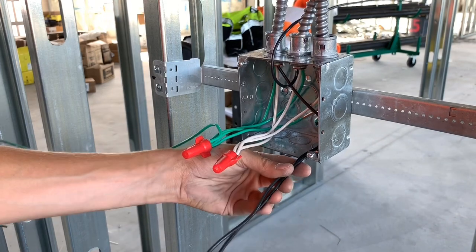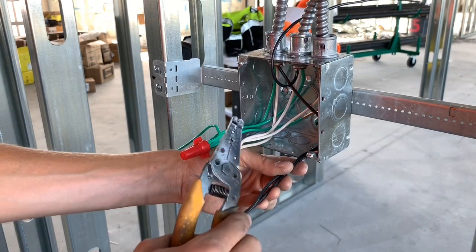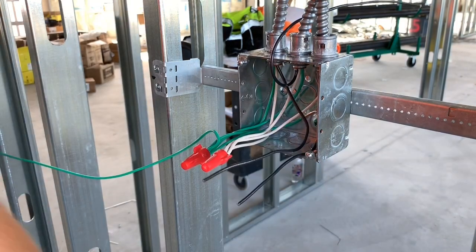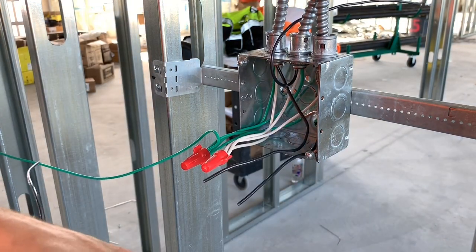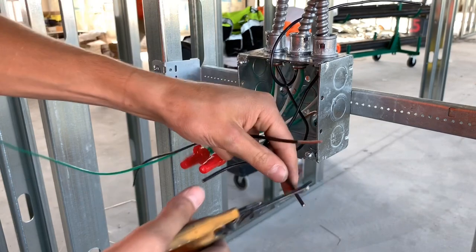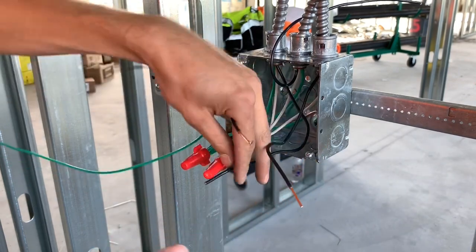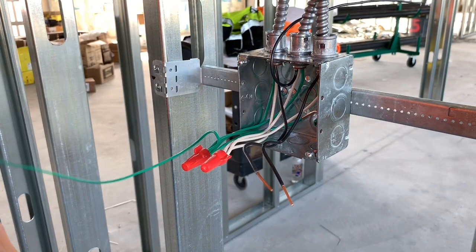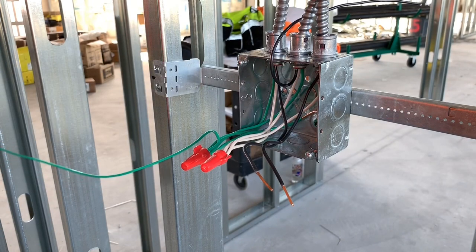So I'm going to tie the powers together. When you put the switch in, it only has two screws. One of them is for power. One of them is for the switch leg.